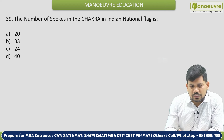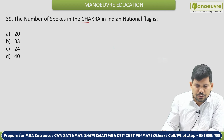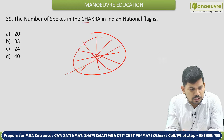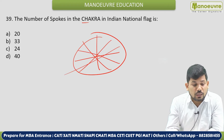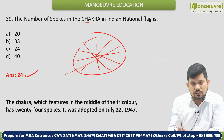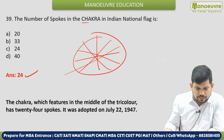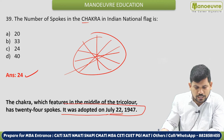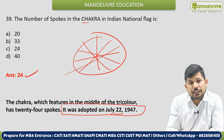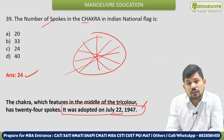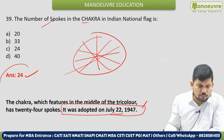Next: The number of spokes in the Chakra in the Indian flag is — 20, 30, 24, or 40? The correct answer is 24. Also very important: the Indian flag was adopted on July 22, 1947. This question about the adoption date is more important than the spokes question. Both pieces of information are very important.